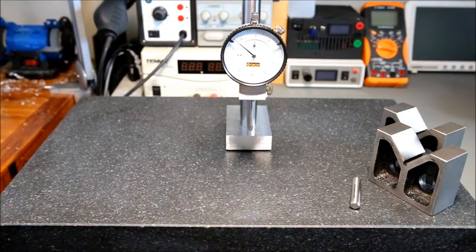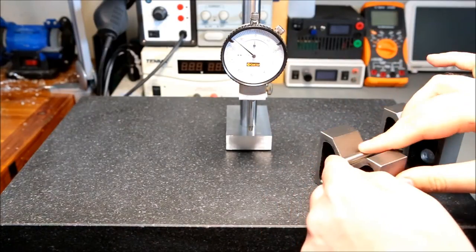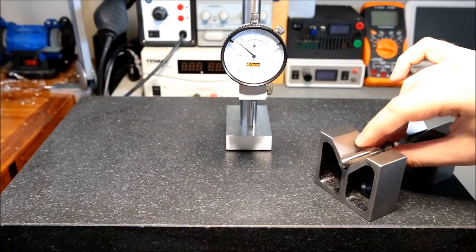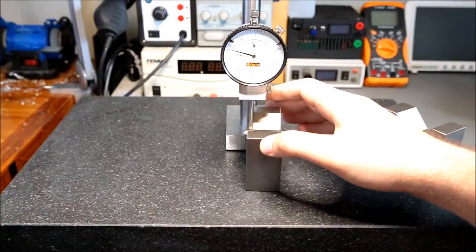I was checking my V-blocks the other day with this precision ground dowel rod here. I've already zeroed out the indicator for this side here.